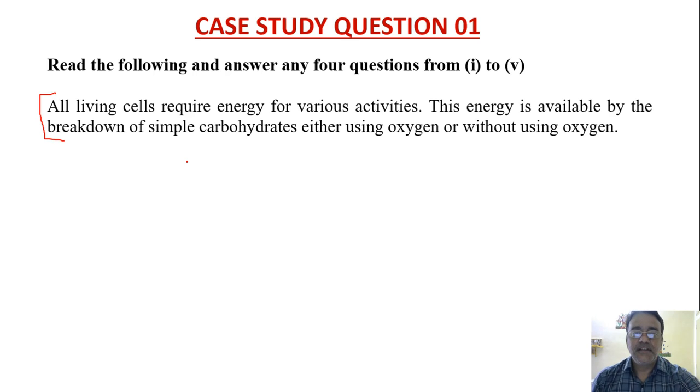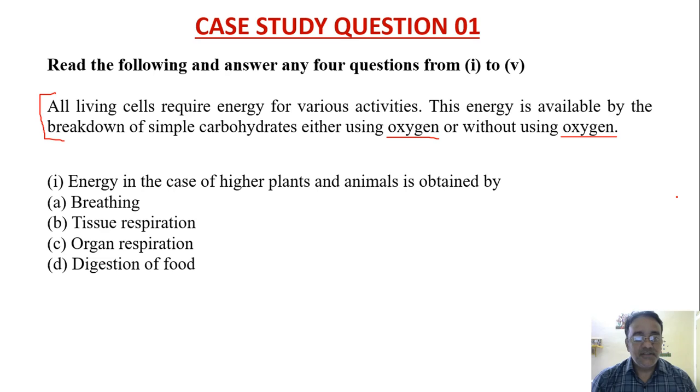This is the first question: energy in the case of higher plants and animals is obtained by what? We have four options: breathing, tissue respiration, organ respiration, or digestion of food.